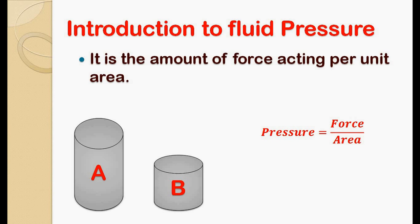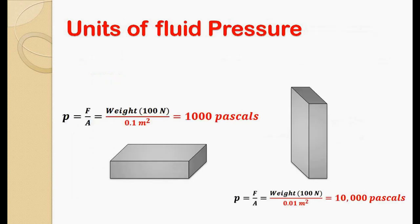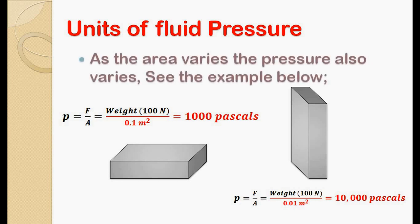Let's see one more example of how pressure varies with change in area. Here there is one block filled with some fluid. In first case it is kept in horizontal position, and in second case it is kept vertical. Since it is the same block, weight remains the same, only the bottom area varies. So the pressure at the bottom in first case is 1000 pascal, and for second case it is 10 times higher, that is 10,000 pascal.